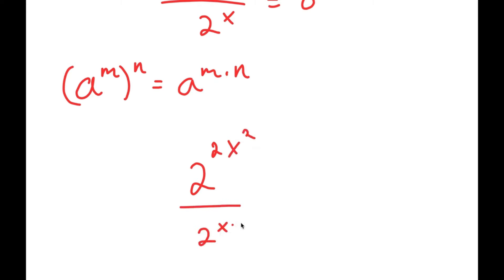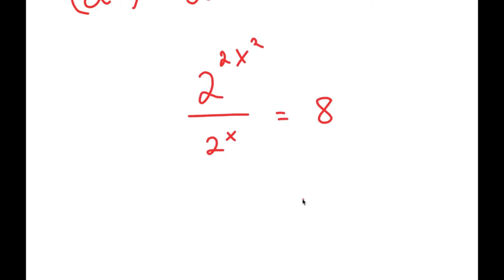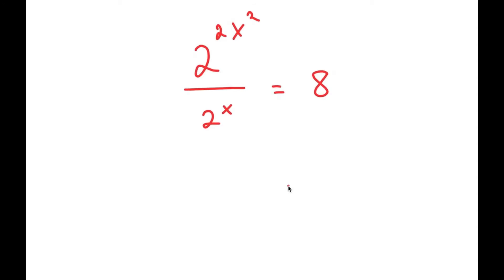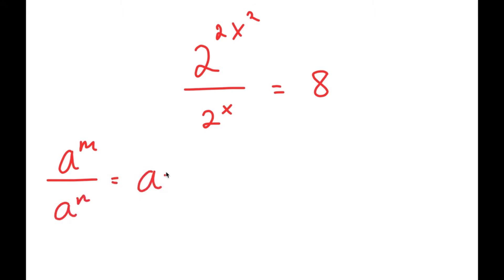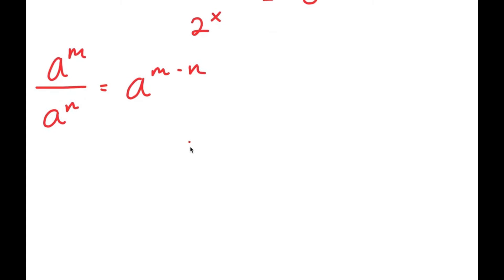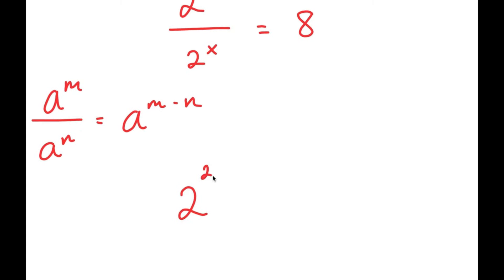Now, 2 to the power of 2x squared over 2 to the power of x is equal to 8. If I have something in the form a to the power of m over a to the power of n, this equals a to the power of m minus n. So 2 to the power of 2x squared over 2 to the power of x equals 2 to the power of 2x squared minus x, and this is equal to 8.